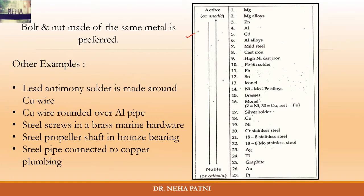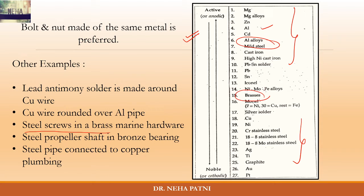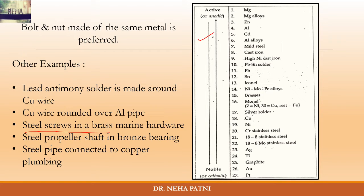Let me show you the galvanic series. Higher in the series are active metals; lower in the series are noble metals. If you place them in conjunction, obviously the metal higher in the series will corrode. For example, steel screws in brass marine hardware always corrode because steel is more active. So if you want to save one metal, you make it in conjunction with a metal higher in the series, so that the higher one corrodes and your metal is saved.